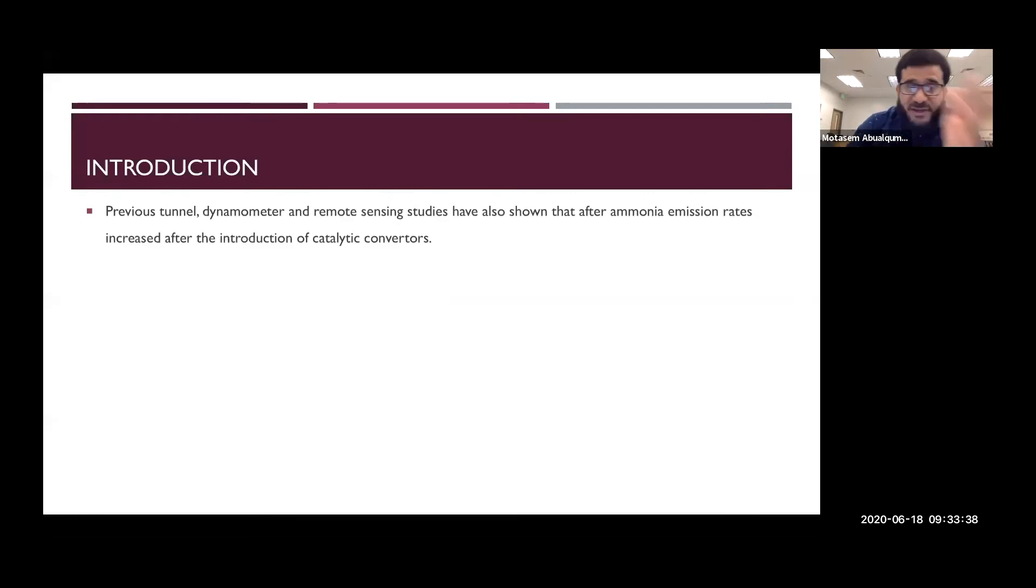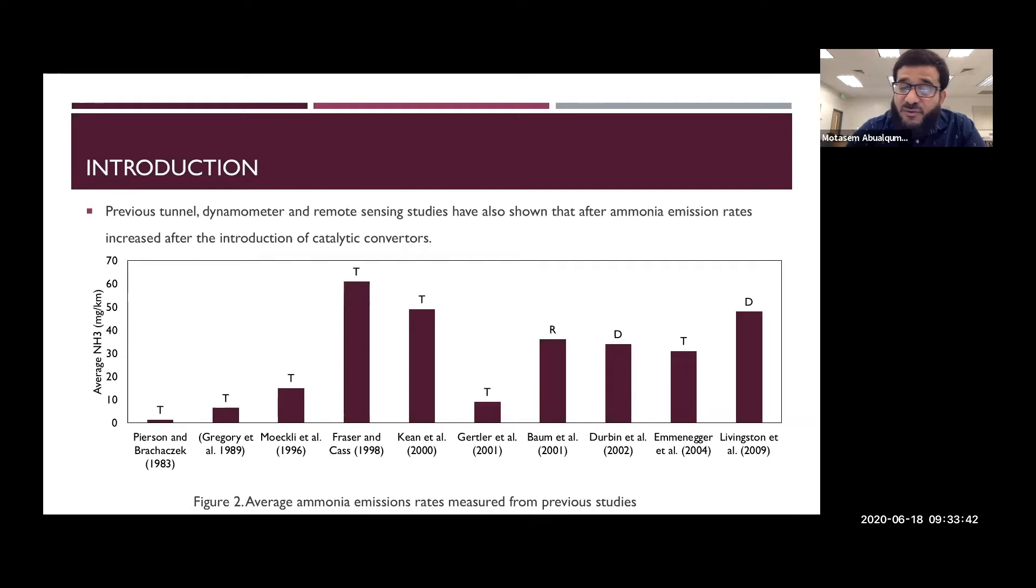The previous tunnel, dyno, or remote sensing studies—all of them were in a tunnel, on a dyno, or using the remote sensing technology. This graph shows us the different studies. I just want to pay attention here that this study was made when only less than 10% of the on-road vehicles had the catalytic converters and the emissions were very low, around 1.3 milligram per mile. But after the percentage of vehicles that has the catalytic converter increased on road, we started to see that the ammonia emissions increased. As compared with 1.3, we have here 30s, we have here 60s. So this is caused because of the catalytic converters. These studies, T for tunnel, R for remote sensing, and D for dyno studies.